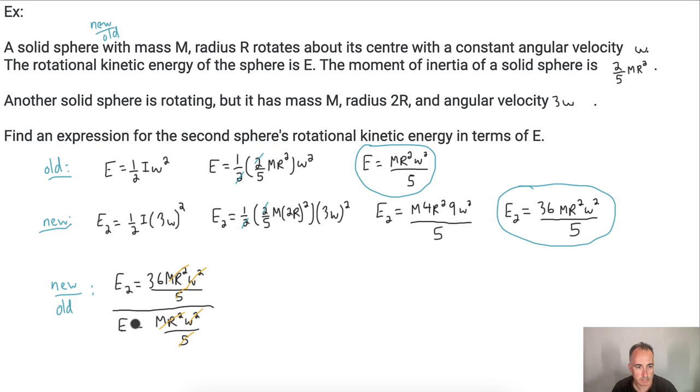That just equals 36. So that means, and finally, I can say that E_2 is just equal to, well, I move my E over to the right, so it's just 36E.